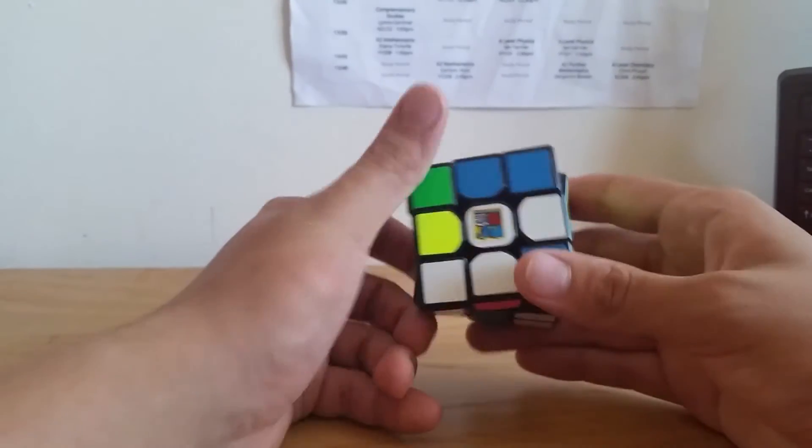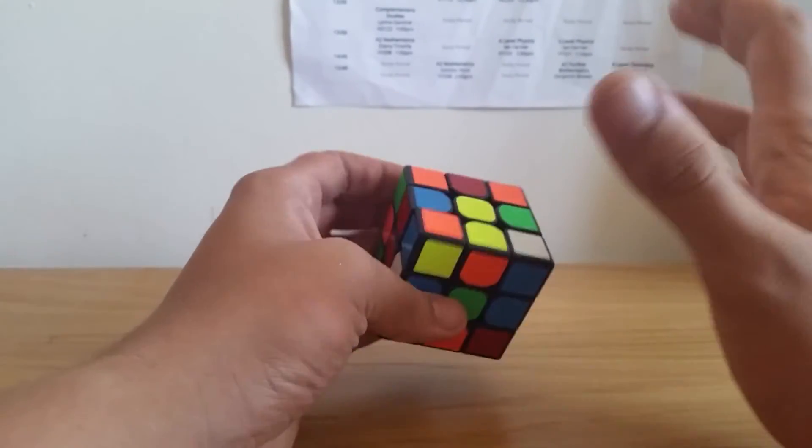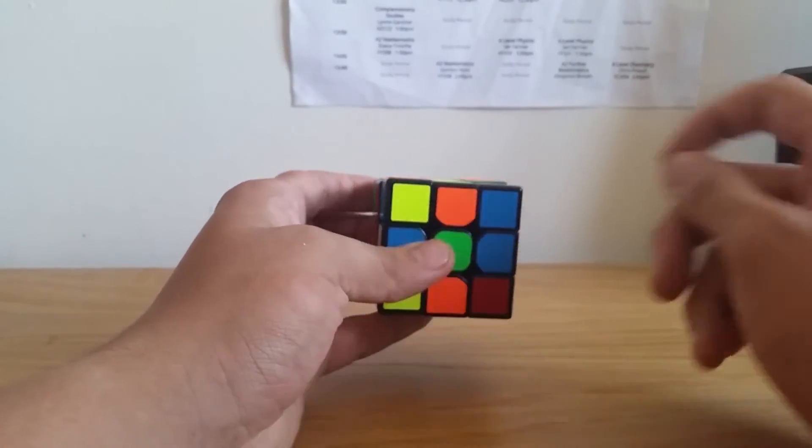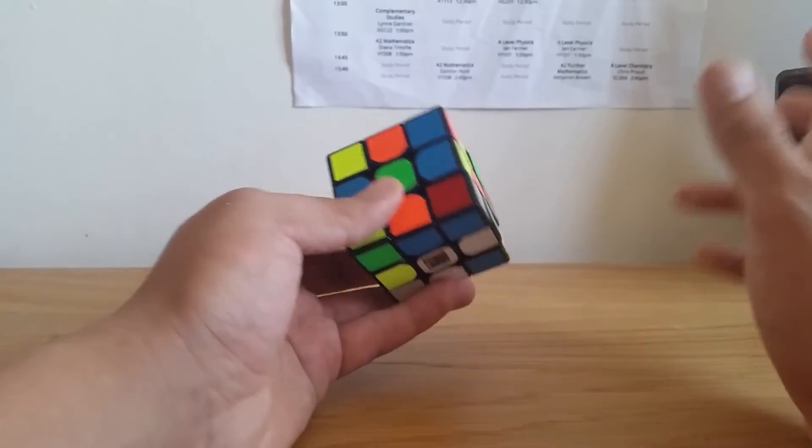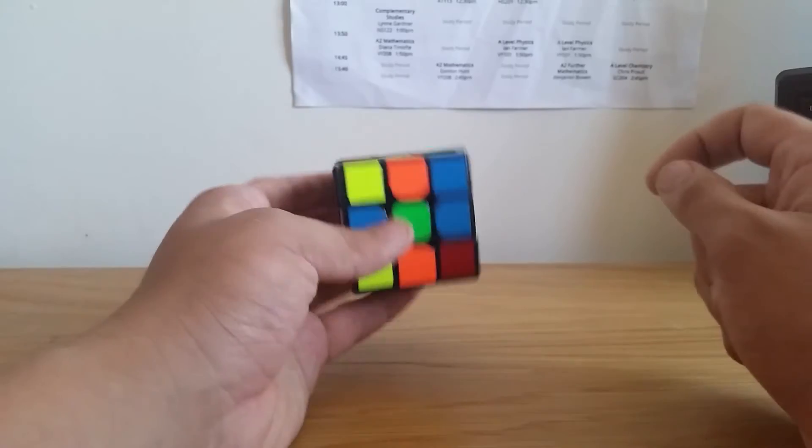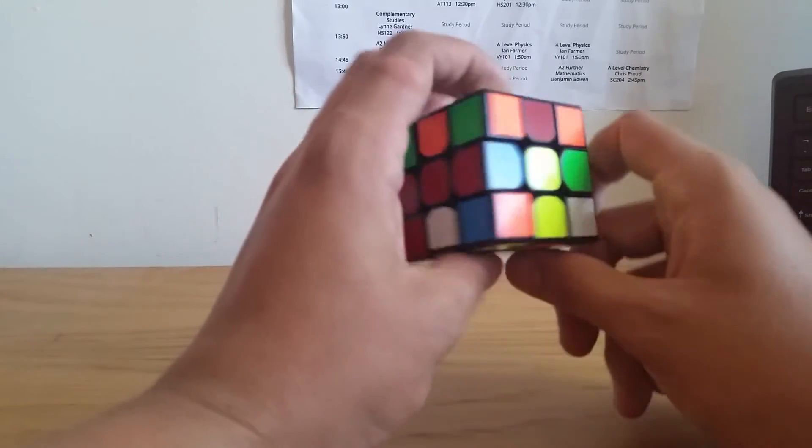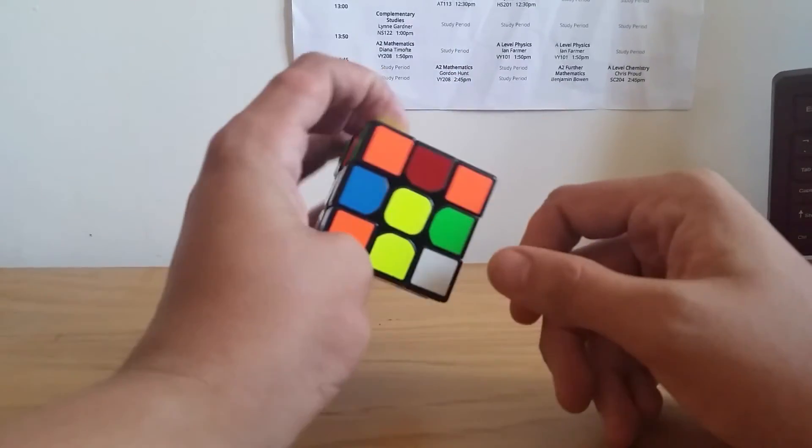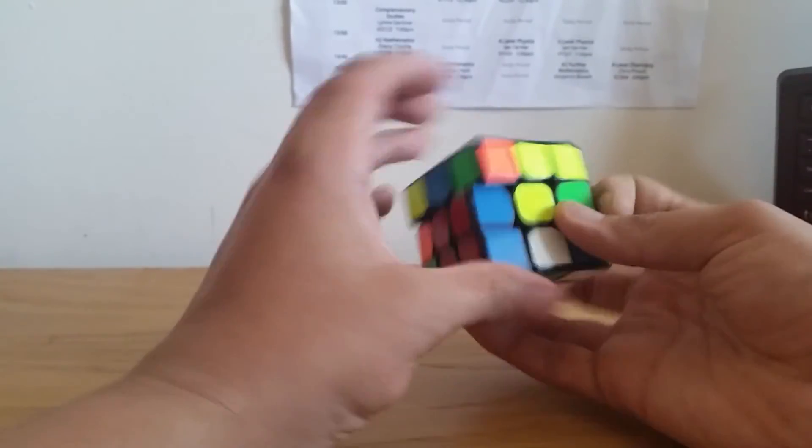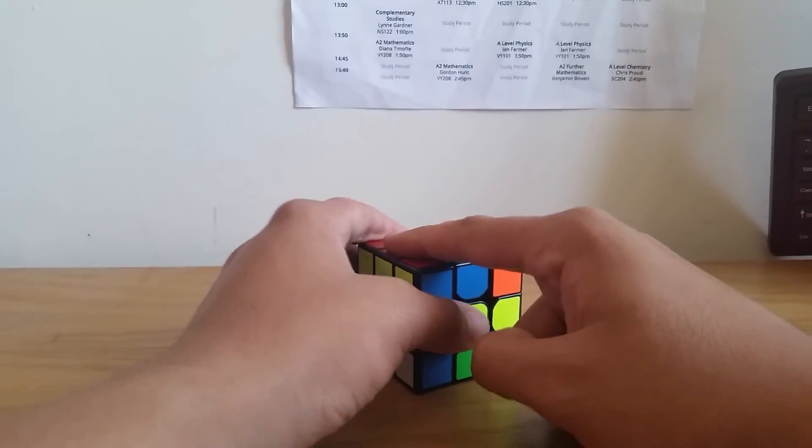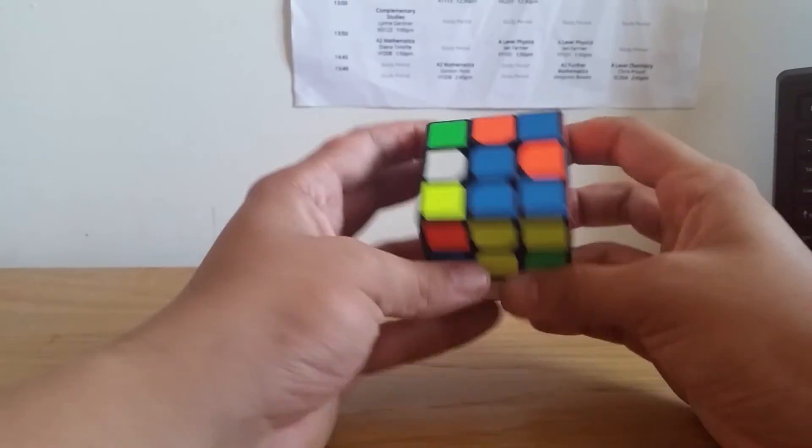We build a completely normal first block. You do nothing weird to the corners, no CP, no CO, no EP, no EO, anything like that. You just build a completely normal first block, just like you would in Roux. So, what we've got here, we've got to go for this one because it pairs up quite nicely. So, first block, done, dusted, easy.